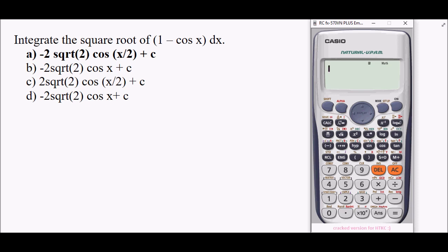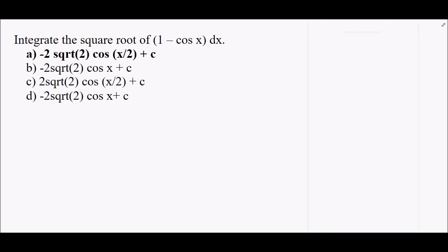We will write it first: square root of (1 - cos x) dx. The technique here is to put the limits—for example, our limits are from π to 0. So we will input this into our calculator.